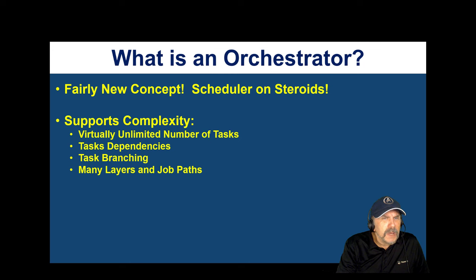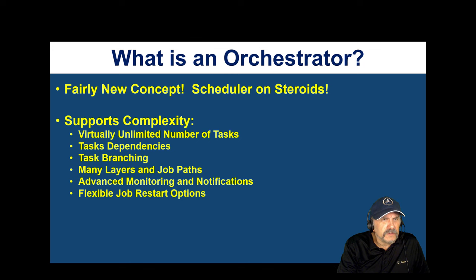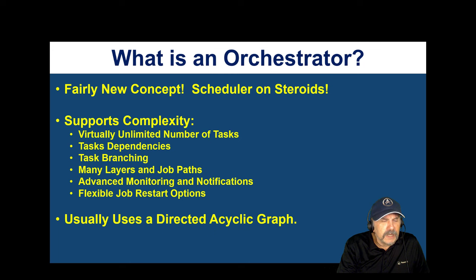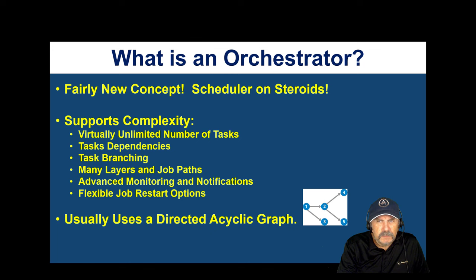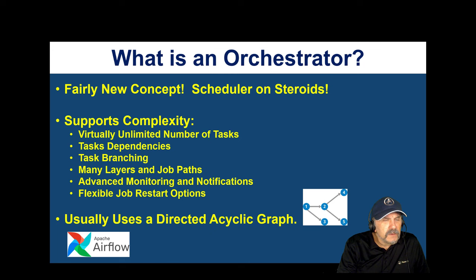You should have advanced monitoring and notifications — if any part of your DAG fails, you need to know and notify somebody. With a complex DAG potentially running for hours, you want the ability to restart from where you left off rather than from the beginning, and that's where orchestrators shine. An orchestrator uses a DAG — a directed acyclic graph — where task one completes, then tasks two and three can begin, and so on.